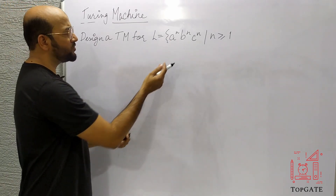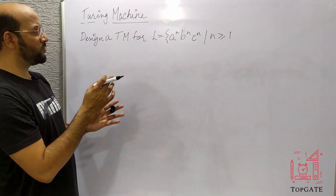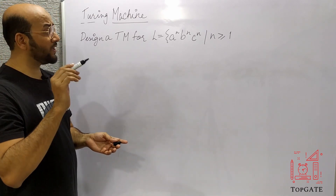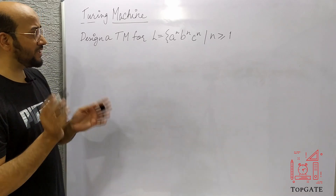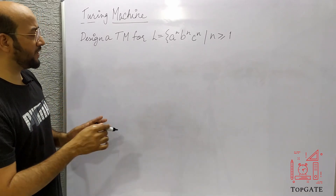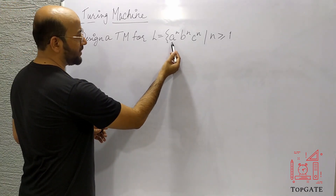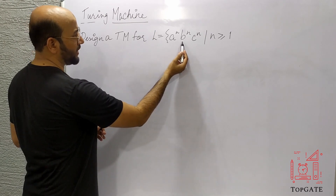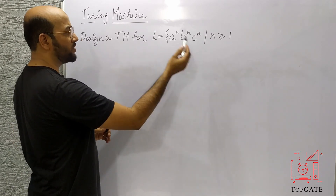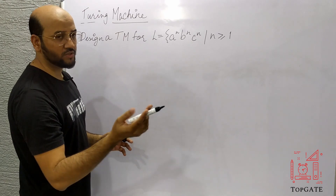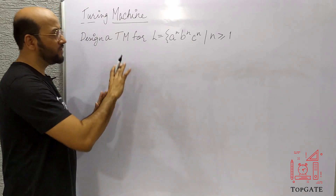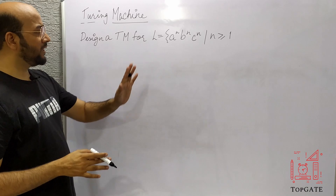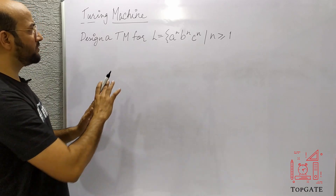The logic is the same as what we did in the previous video for L = A^N B^N. We read the A first, change it to X, move to the right, find the B, change it to Y, move to the right, find the C, change it to Z. So we have more than one comparison to be done.